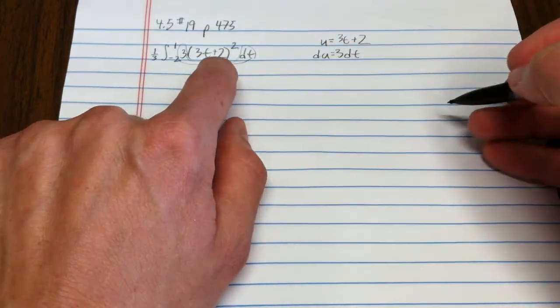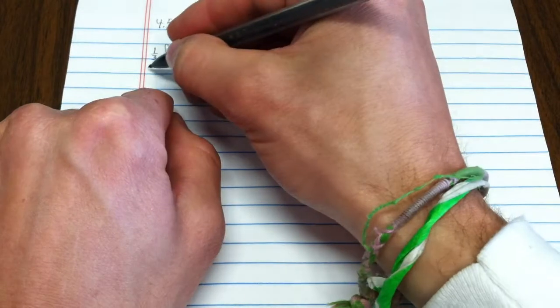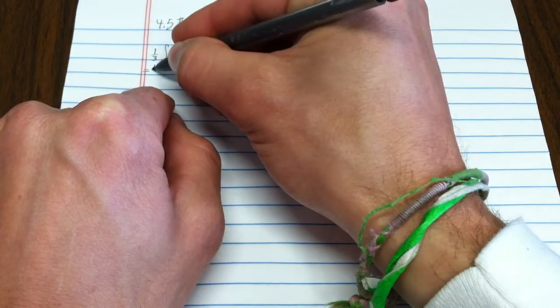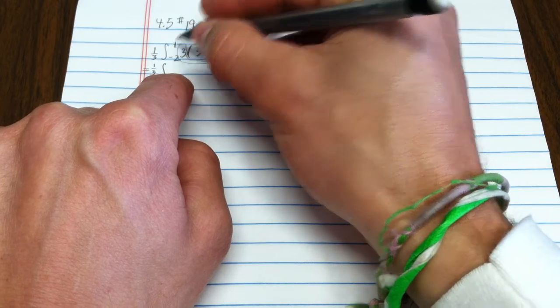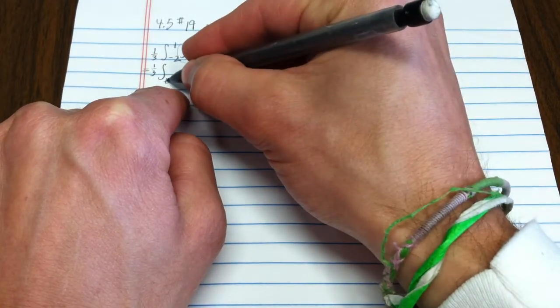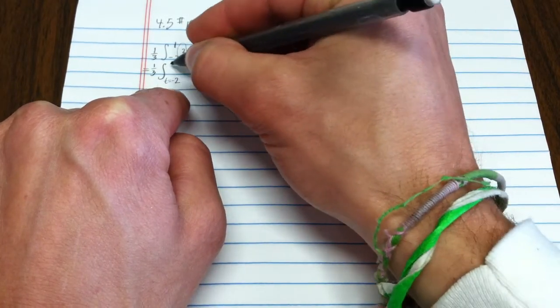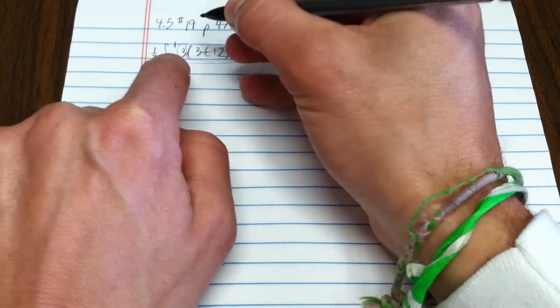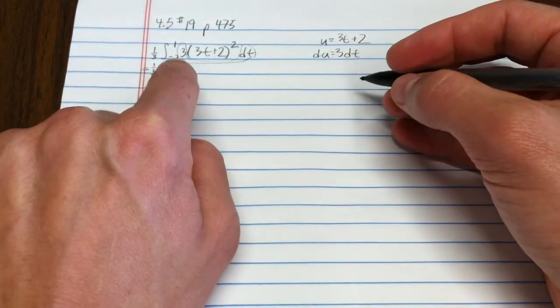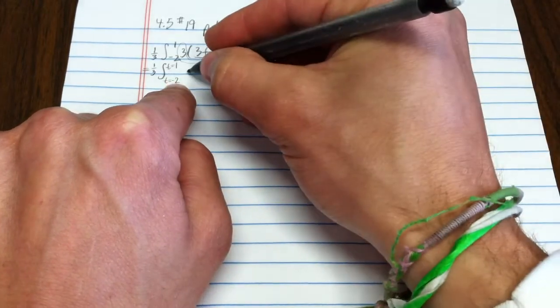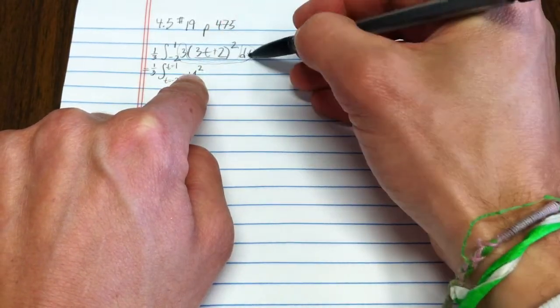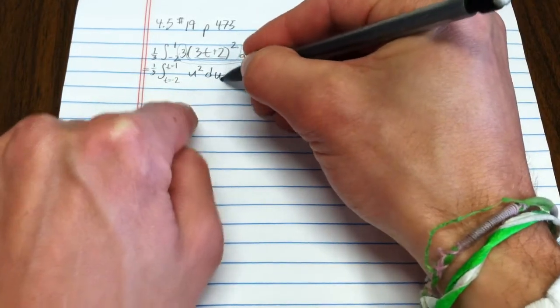I've circled du, so what I'm going to have is this is going to be equal to 1 third. Now, these limits of integration were t values, so I'm going to write that out, because when I change my variable, I need to remember and indicate to my reader those are t values. This is my u, so I'll have u squared, and this circle is du.